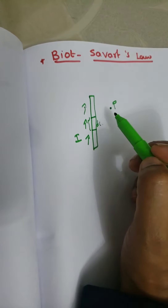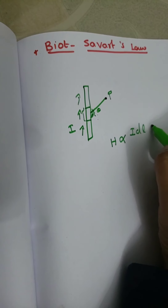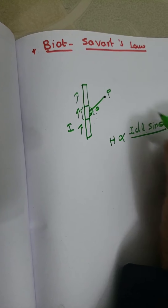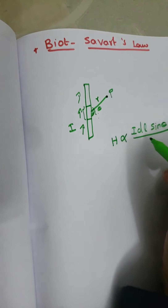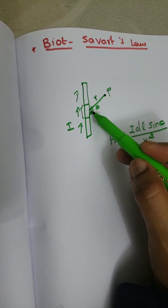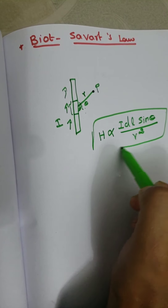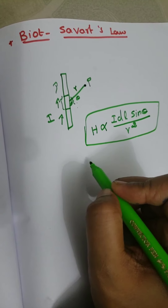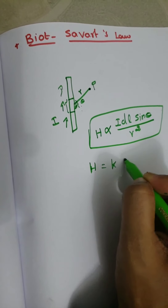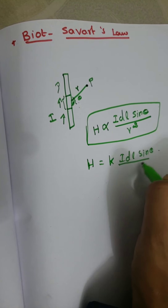The Biot-Savart law states that the magnetic field intensity H is directly proportional to the current I, the magnitude of the differential length DL, and the sine of the angle theta between the line joining point P and DL, divided by the square of the distance R between point P and DL. So H is equal to K times I DL sin theta divided by R squared.